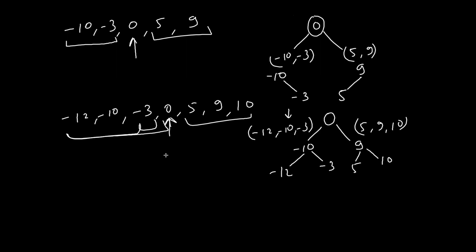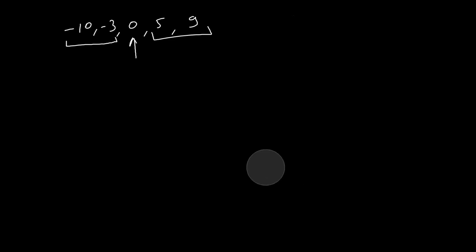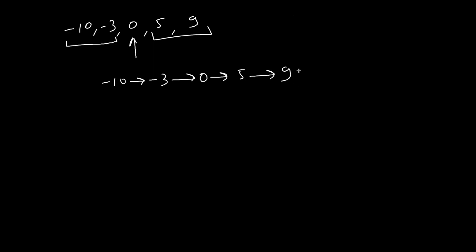The tricky part for this question is finding the middle element of the linked list — that is the only tricky part, and everything else is the same as before. We have our list: minus 10, minus 3, 0, 5, 9. We use the fast and slow pointer method: we put two pointers at the head of the linked list. The fast pointer will traverse two nodes per step and the slow pointer will traverse one node per step.